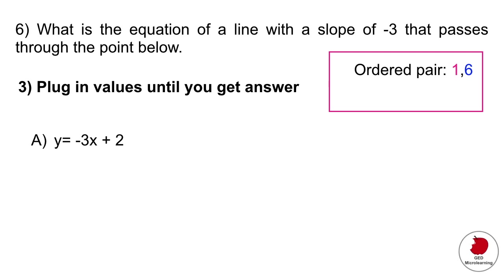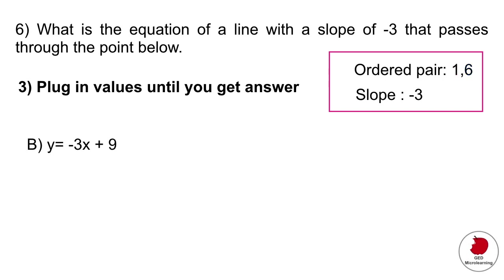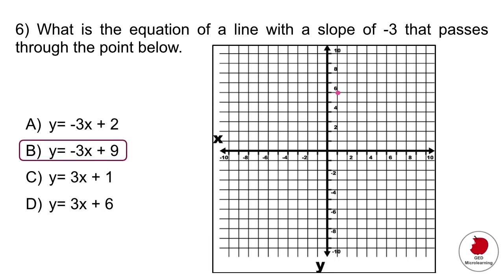We know x equals 1, y equals 6, and slope equals minus 3. Plug those into option A's equation — where you have y put 6, where you have x put 1, and slope is minus 3. Working it out gives 6 equals minus 1, which is incorrect, so answer A is wrong. Testing option B the same way gives 6 equals 6, so the correct answer is option B.